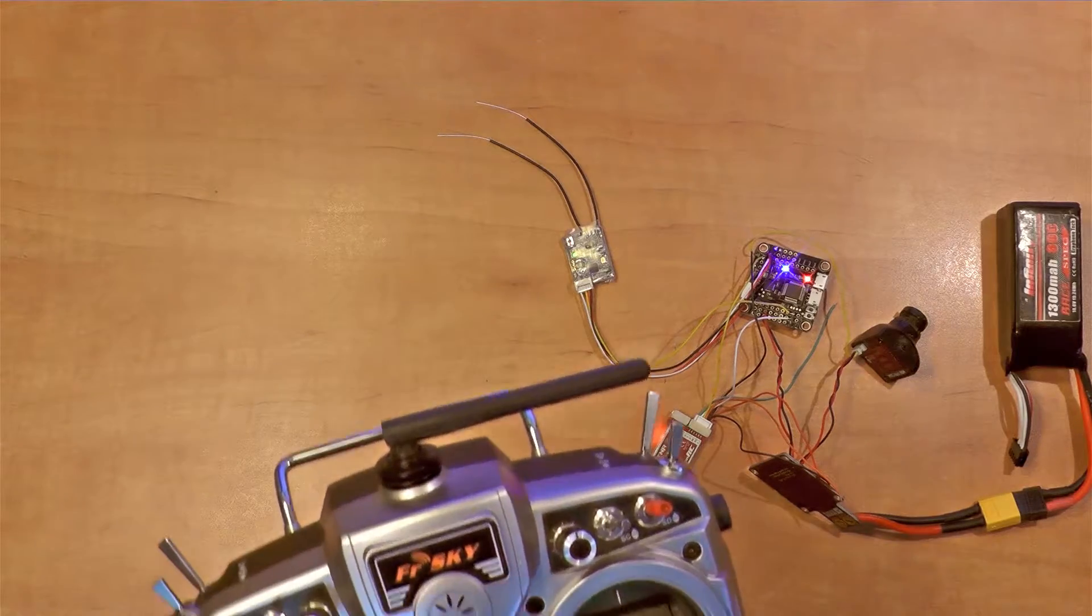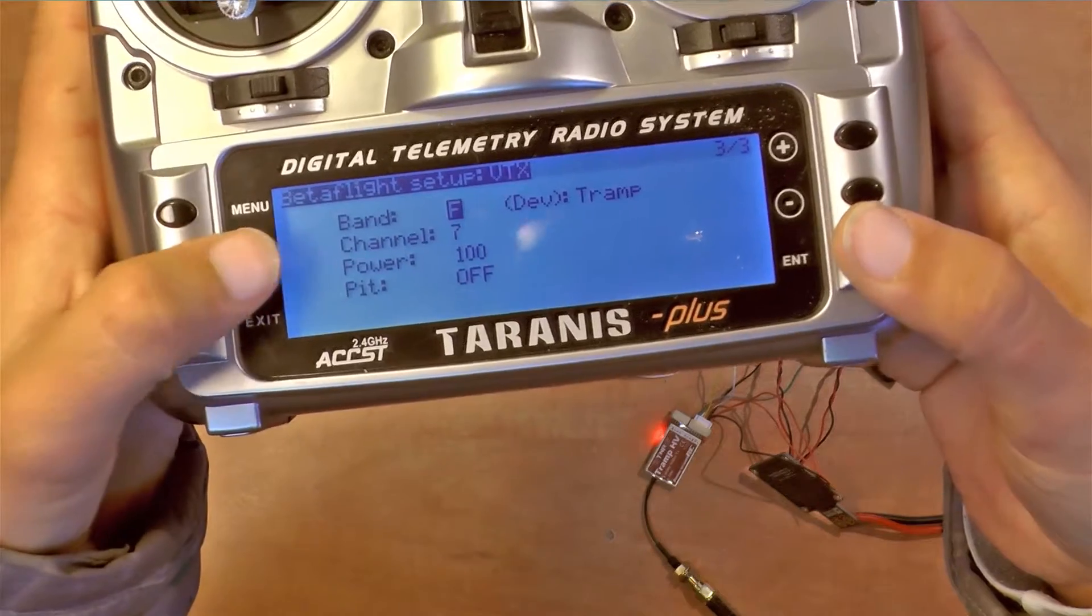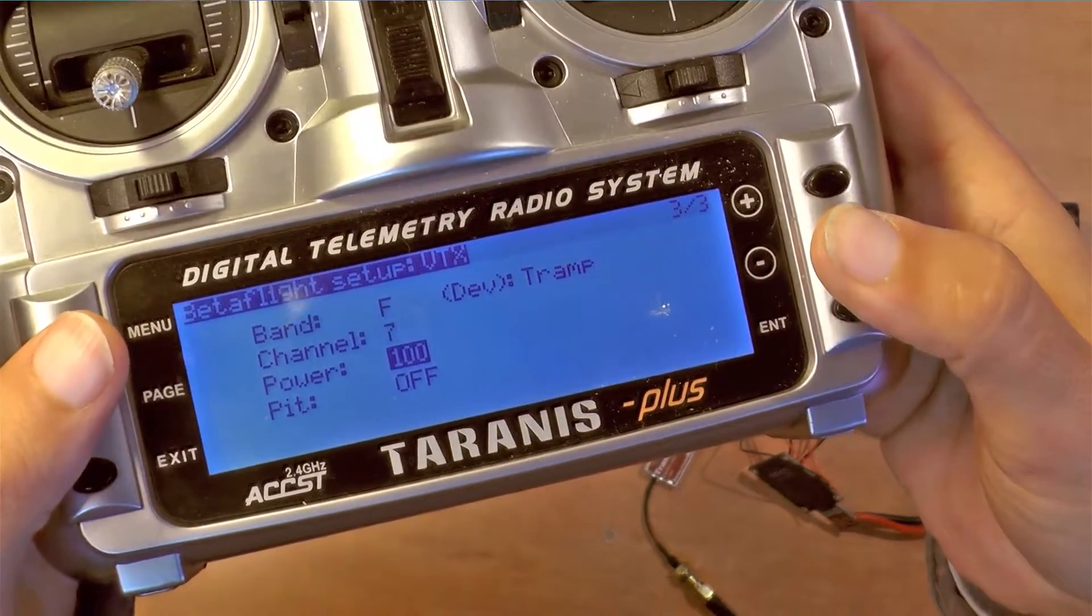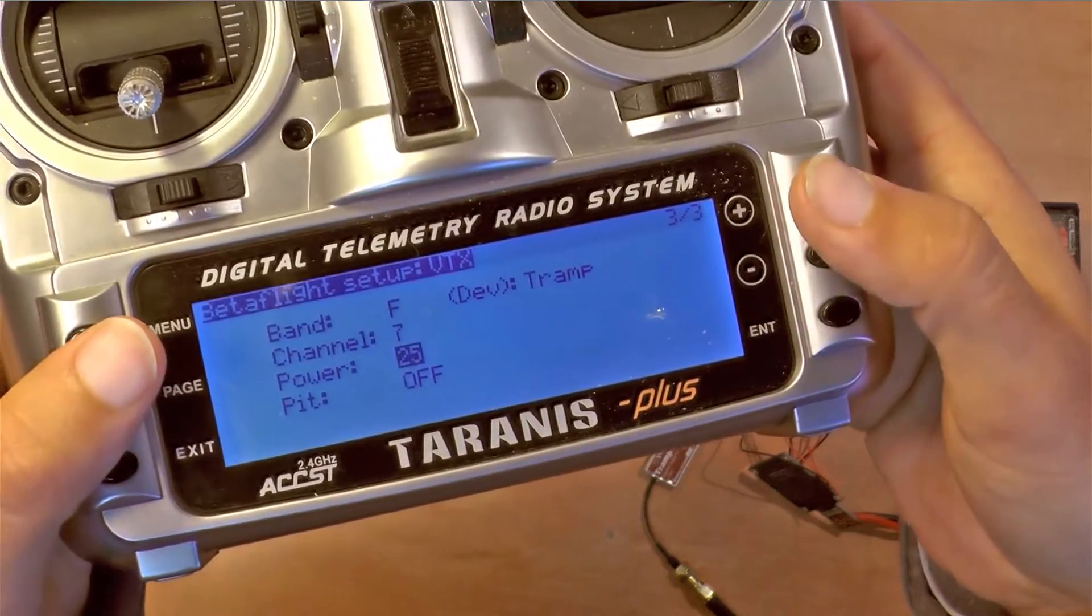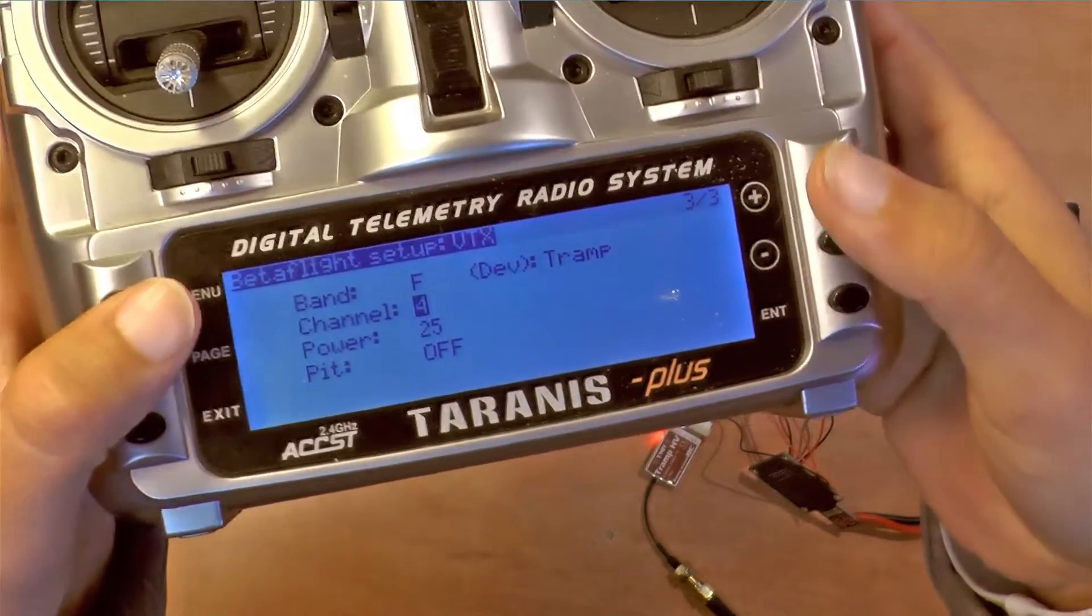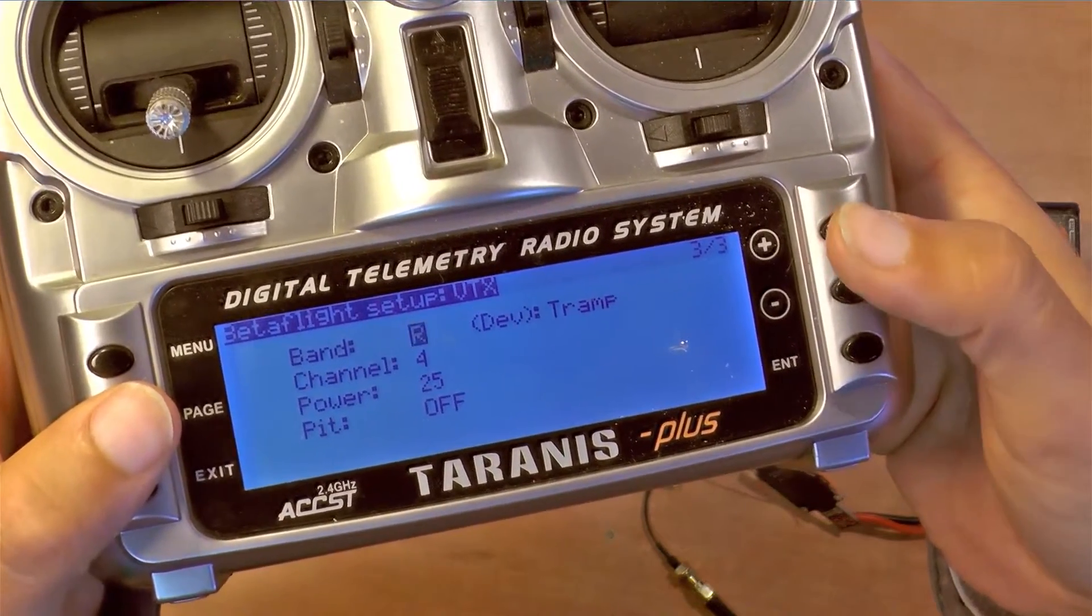As you can see, when I long press this page button and getting to the Lua script, you see all the settings. Let's just change it back to 25 and I can play with the settings. I have the band, now it's on that chart, you can change the band.